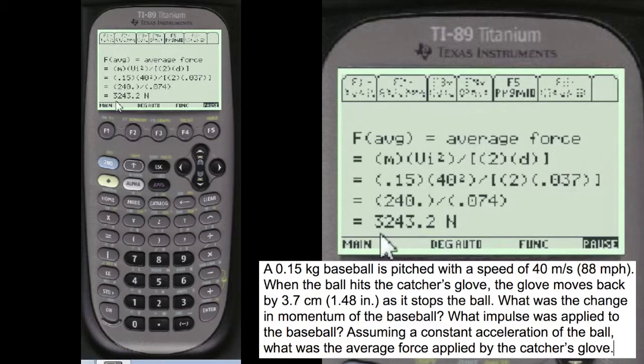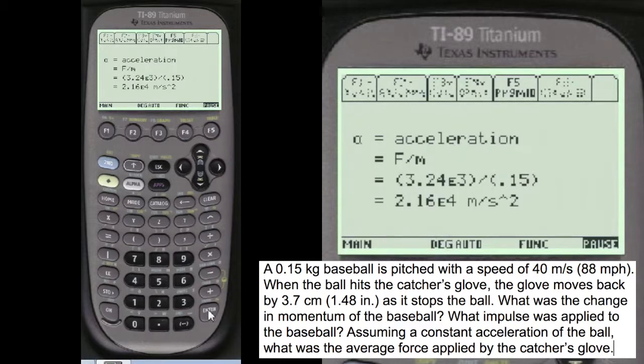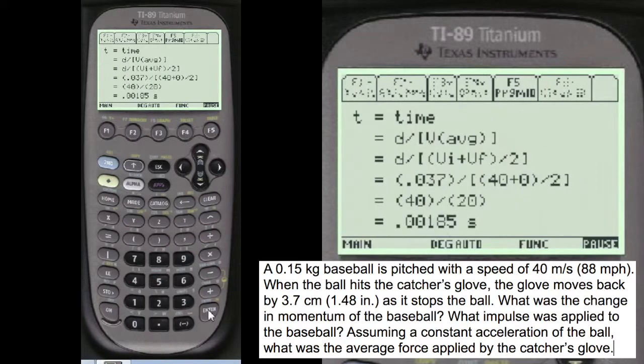And the average force is 3243.2 Newtons. Acceleration is 2.160 times 10 to the 4 meters per second squared. Time is of the hit 0.00185. That's actually time occurring for the velocity of change from final velocity to initial velocity.